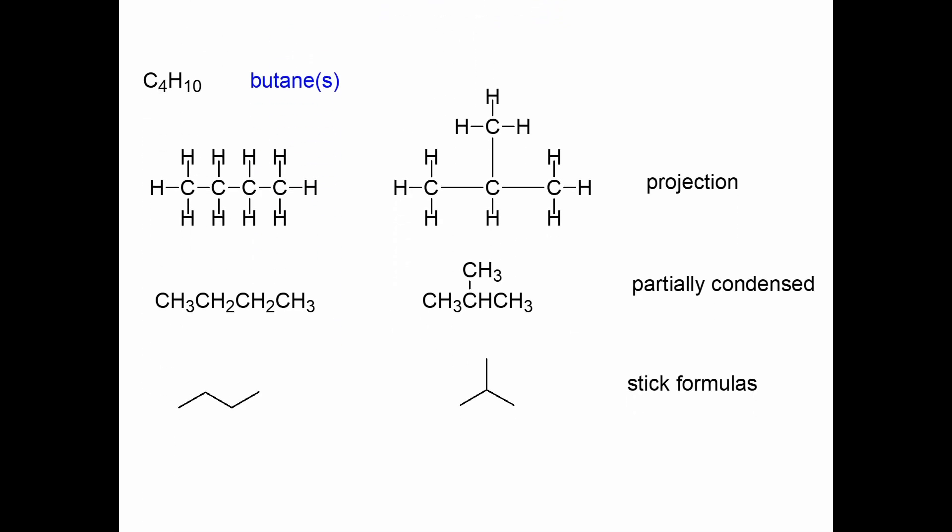From C4, we start having what we call isomers. From this slide, you can see the different ways these compounds can be represented. We can have it as a straight chain or as a branched chain — we call it a projection. It can also be put in partially condensed form, or represented with a stick formula.